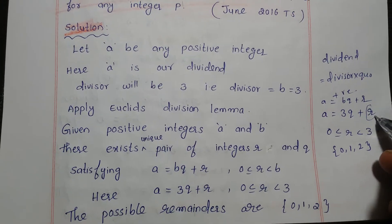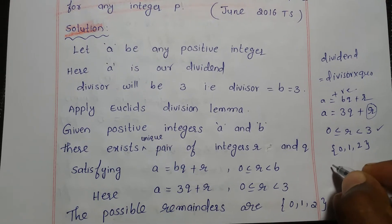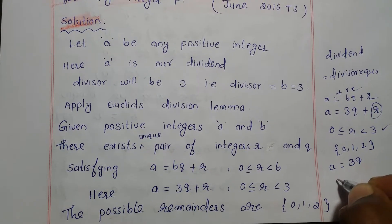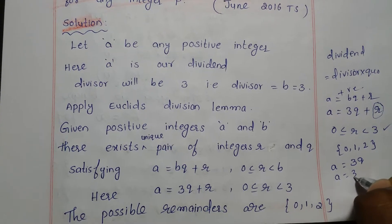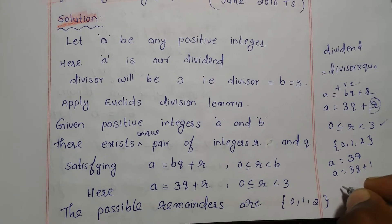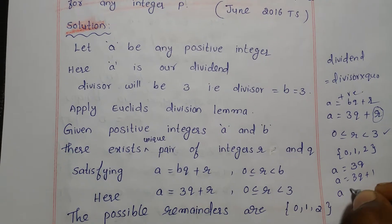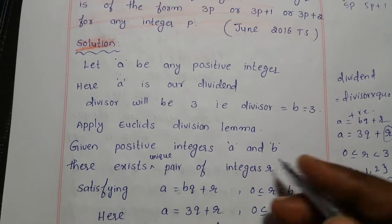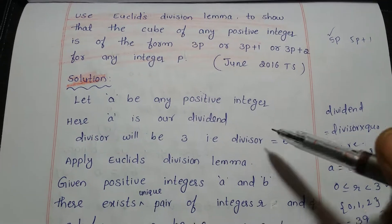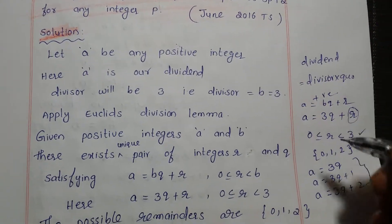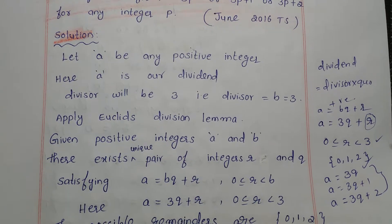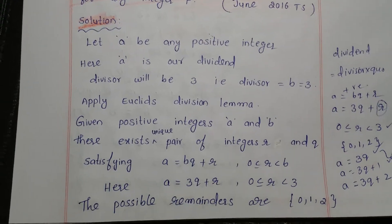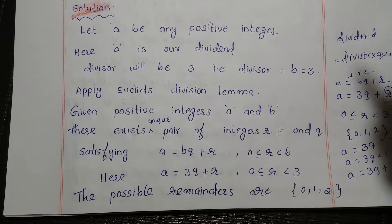So a equals 3q plus r. The possible remainders are 0, 1, and 2, since r must be less than 3. In the next step we substitute these remainders in place of r: if r equals 0 we get a equals 3q; if r equals 1, a equals 3q plus 1; if r equals 2, a equals 3q plus 2. The question asks for the cube of any positive integer, so we cube both sides in each case.